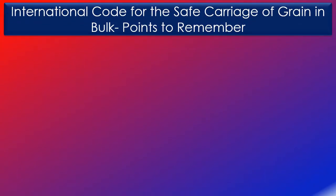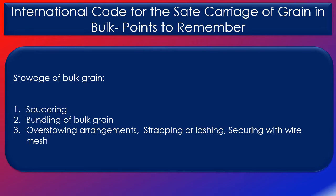The stowage of bulk grain chapter describes how bulk grain should be stored, what the strength of the grain fittings should be, and procedures for saucering and bundling of bulk grain, over stowing arrangements, strapping or lashing, and securing with wire mesh. Key takeaways from this chapter are that you should level all free grain surfaces to minimise the effect of grain shifting. The grain shall be trimmed so as to fill all spaces under the deck and hatch covers to the maximum extent possible. After loading, all free grain surfaces in partially filled compartments shall be level, and grain surfaces shall be secured by over stowing, strapping or lashings as per the requirements of the code.